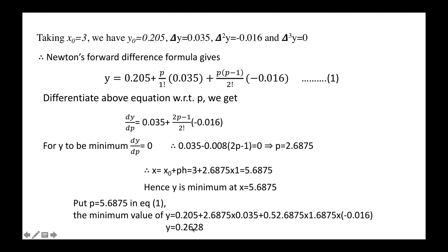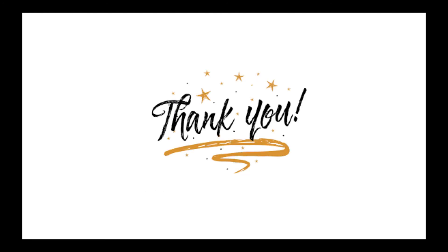Substituting p = 2.6875 into equation (1) gives the minimum value of y = 0.2628. So the data has a minimum at x = 5.6875 with y = 0.2628. In this video we discussed numerical differentiation using forward and backward difference formulas, and how to find maxima and minima from a given set of data using the derivative approach.